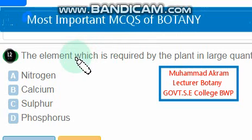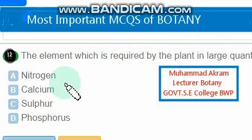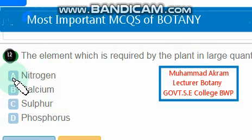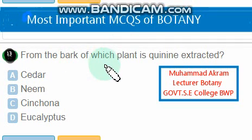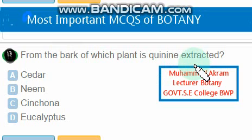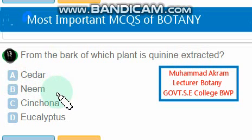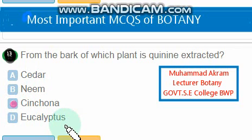The element required by the plant in large quantity — the right option is option A, nitrogen. Nitrogen is the element required by plants in large quantity. From the bark of which plant is quinine extracted? Cedar — no; neem — no; cinchona — yes, the right option is option C.